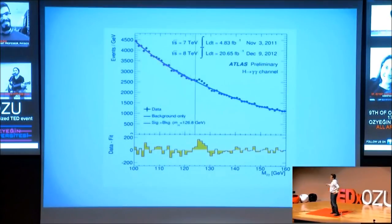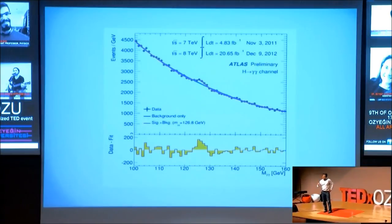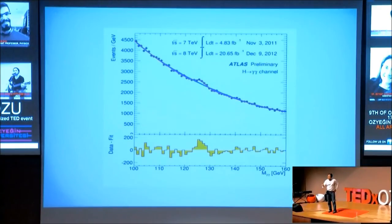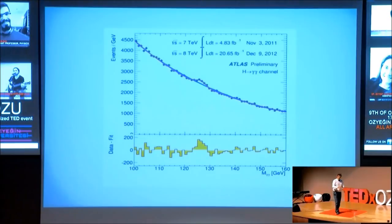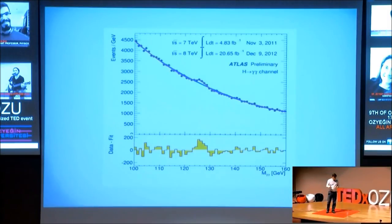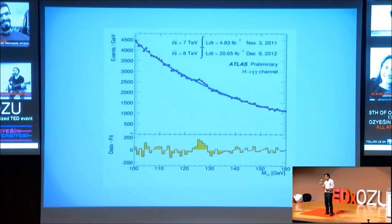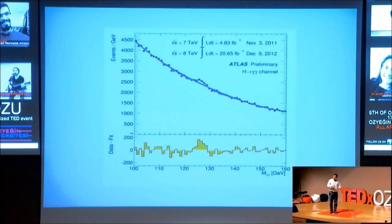This blue line tells us the number of photon-photon pairs expected from the standard model, and the excess tells us there is something more in nature than expected. The question is: what is the probability of having this excess by chance? The probabilistic quantum nature of the theory could be delusive. But the probability of having this excess by chance is one in a million — which means we are pretty sure that the Higgs exists. And that's why they awarded the Nobel Prize to these two gentlemen.